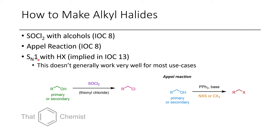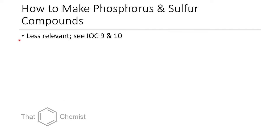You could also do an SN1 with an acid like HCl, HBr, or HI, but this isn't a very good approach most of the time — there are cases where it works, but the previous methods are much more reliable. If you want to make phosphorus or sulfur derivatives, I'd encourage you to look at lectures 9 and 10 where we talk about those. They're really straightforward and not worth discussing at length here.